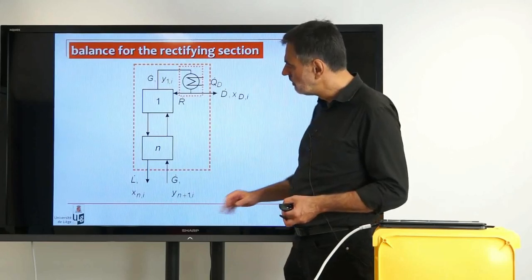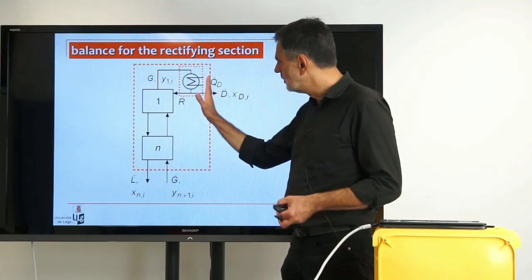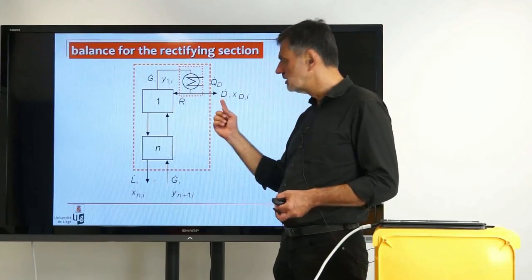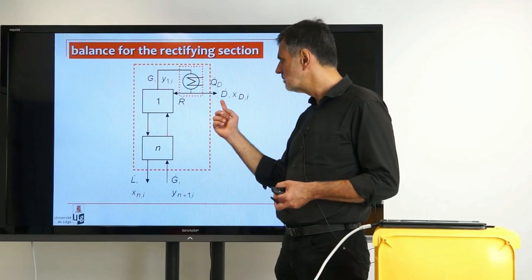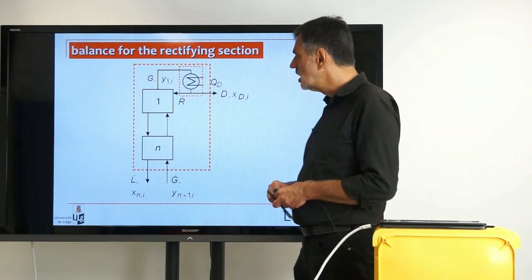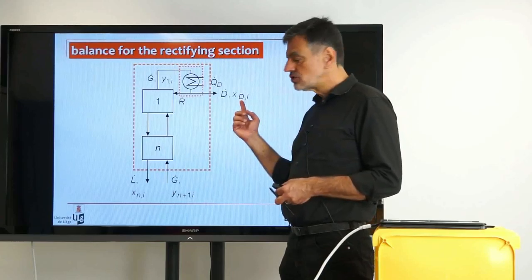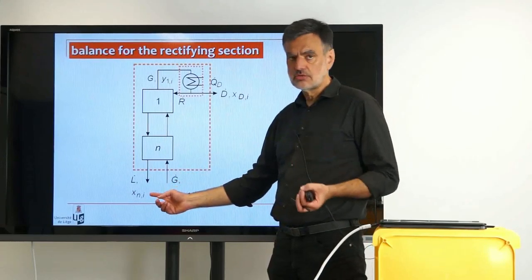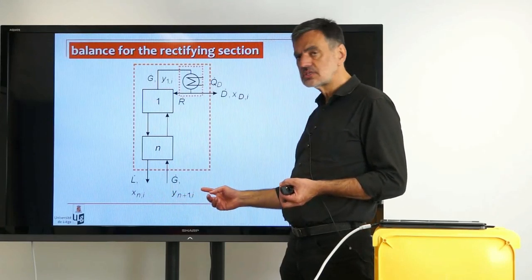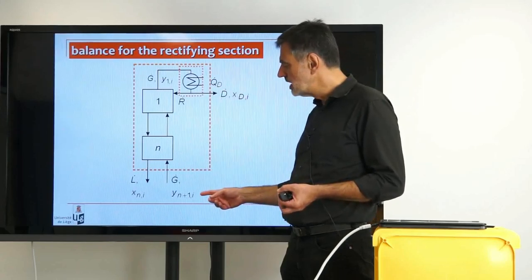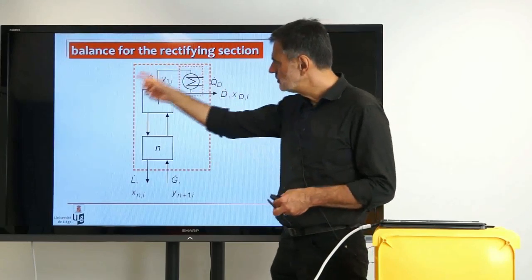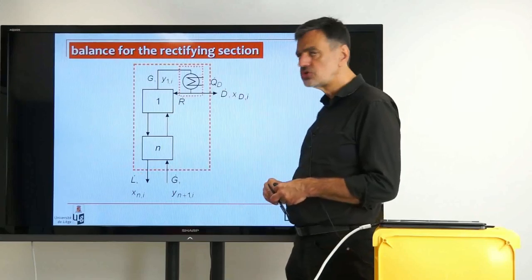We cut with our control volume just below stage number n and our distillate. What is entering is the G-dot; leaving is the L-dot and the distillate product. With the corresponding mole fractions: here is the distillate mole fraction X_D. Since the flow rate L is coming from stage n, it's X_n,i. Since the G-dot is coming from the stage below (counting top to bottom), this is Y_(n+1),i.